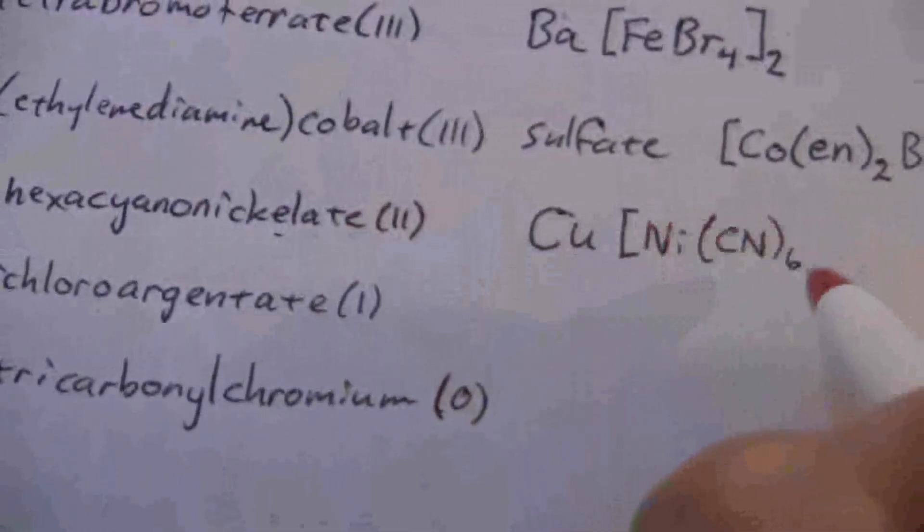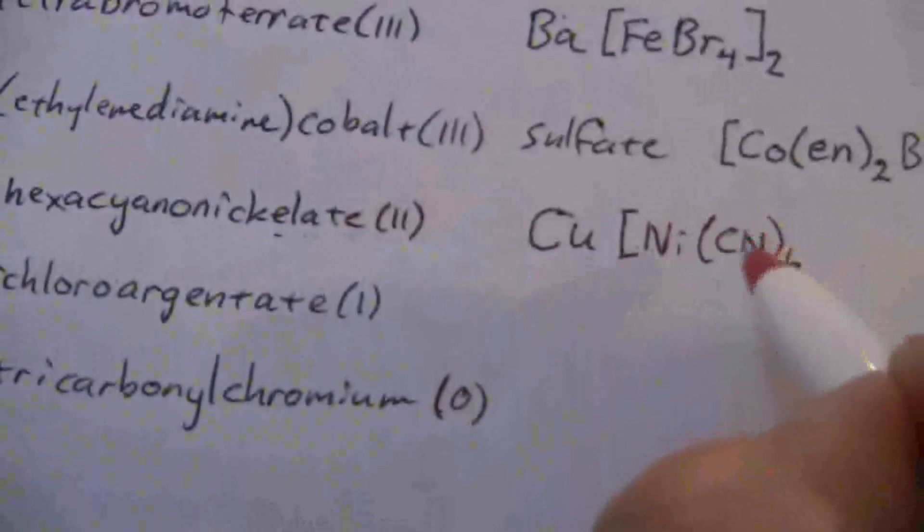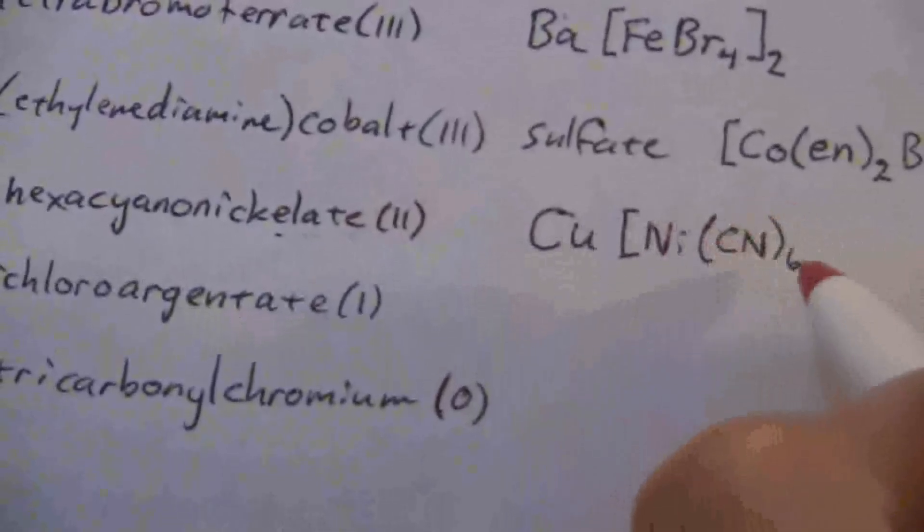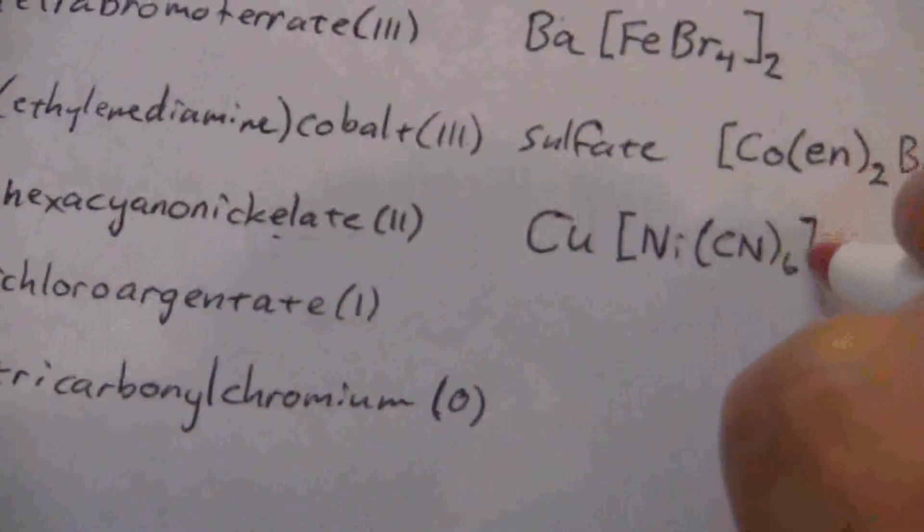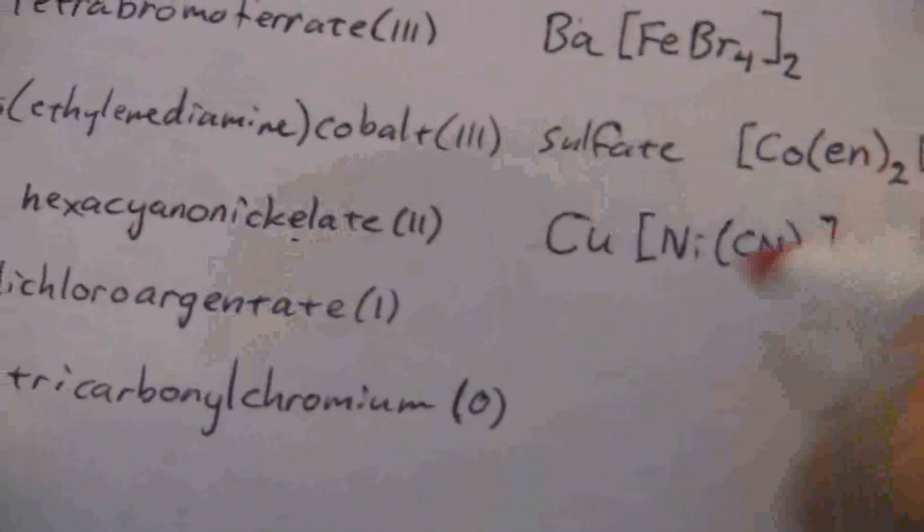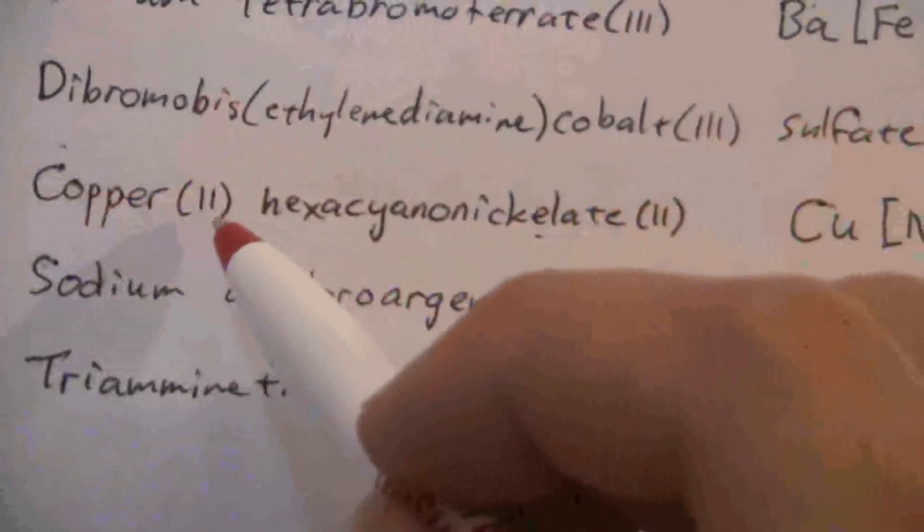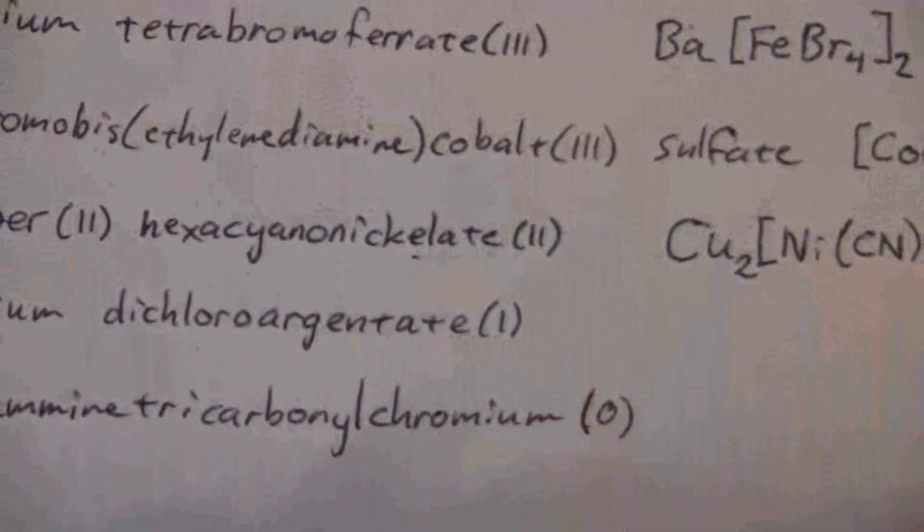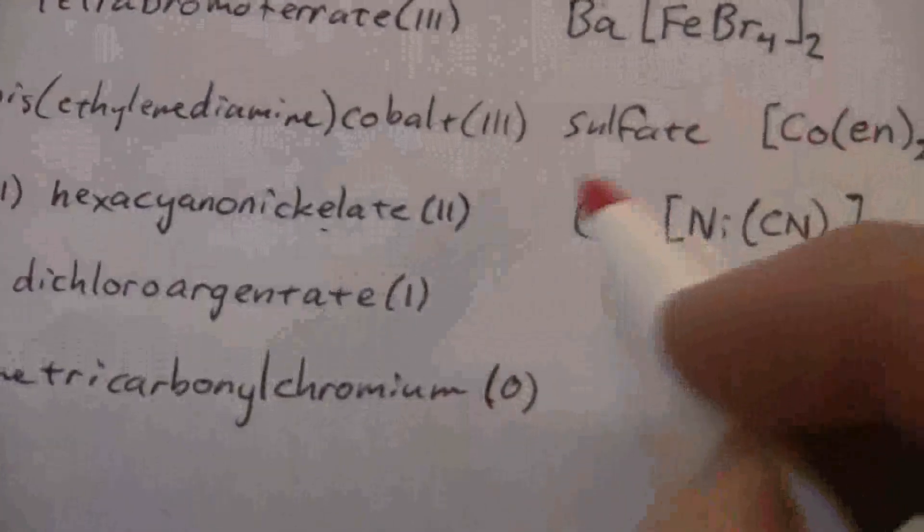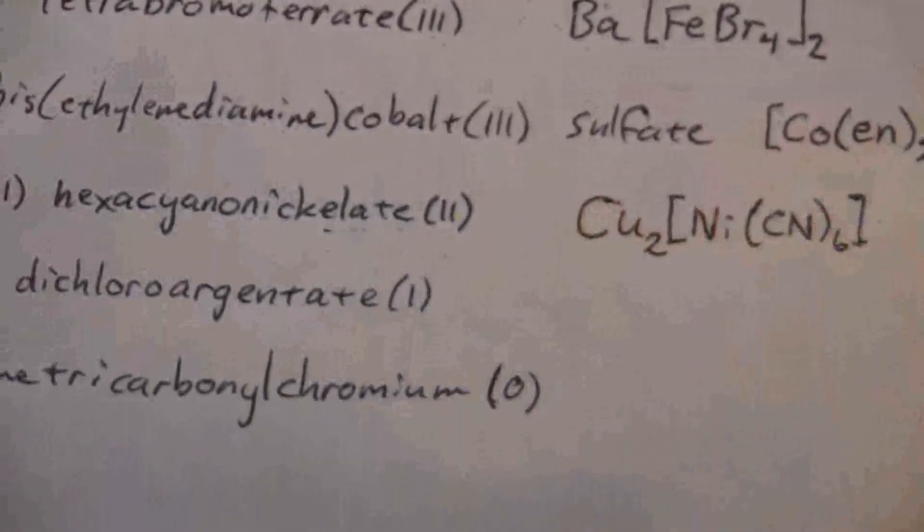So I have a positive two, each of the cyanides is negative one, so negative six and positive two is a negative four. Negative four for the anion, so I go back, this is copper(II), so I put a two there. That will give me a positive four to balance the negative four.